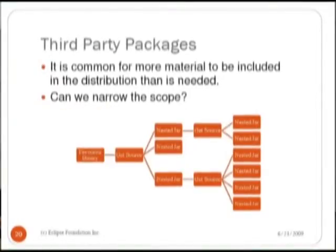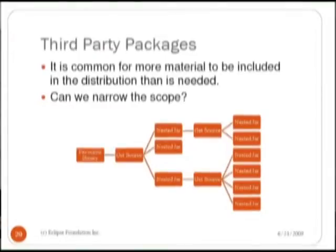One thing that is not necessarily well recognized is there's a lot of nesting that goes on in open-source projects. So if you get a binary for distribution of a project from Apache and you get the related source code, you will actually find many other projects contained within that source code. And if you get the source code for each of the binaries contained in the first level of source, you'll find even more nesting.